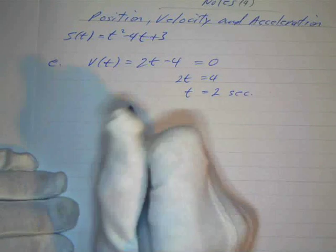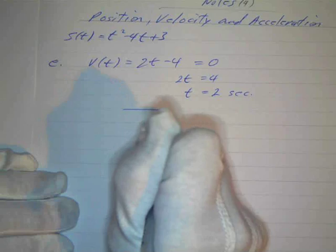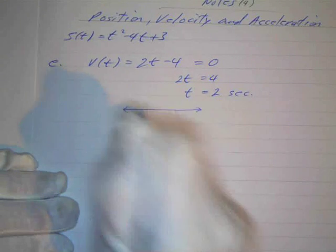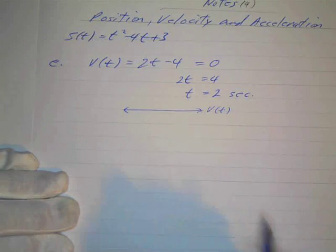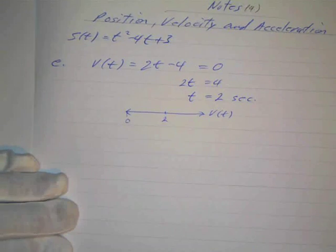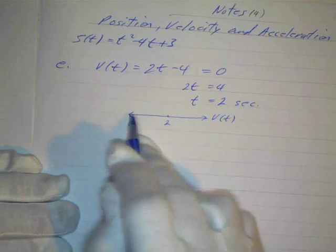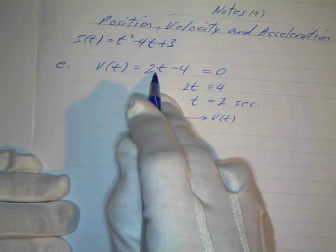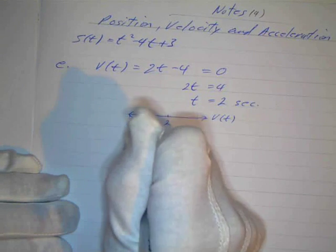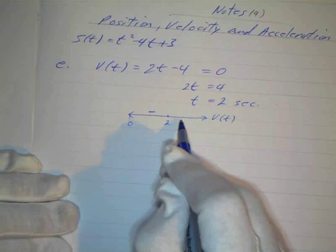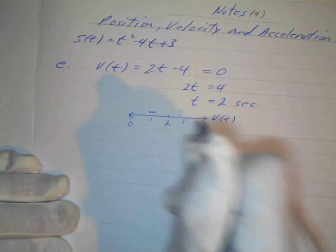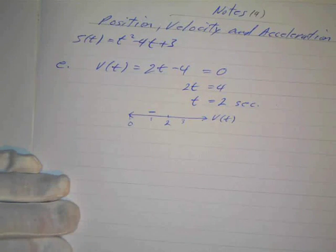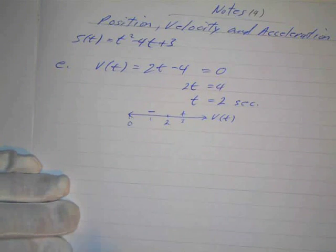We're not totally sure yet, because sometimes a particle can stop and keep going in the same direction. So let's make a little sign line graph for velocity as a function of time. This starts at zero and we mark t equals 2. At t equals 1, the velocity is negative, meaning I'm moving to the left. At t equals 3, the velocity is 6, which is positive.